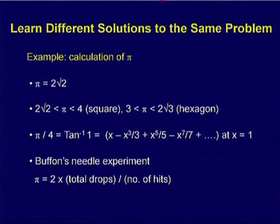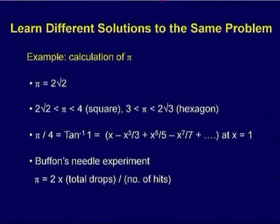A more specific prescription: learn different solutions to the same problem. This is very, very important — for example, you can read a book like '100 Different Proofs of Pythagoras Theorem' to see how the same theorem can be proved in so many different ways. To illustrate this, I have chosen the problem of calculating pi — the ratio of the circumference to the diameter of a circle — because many people can understand this very easily.